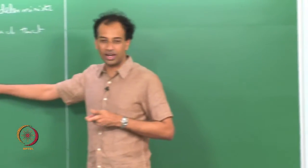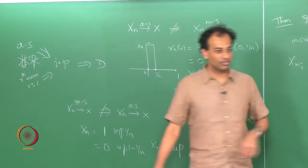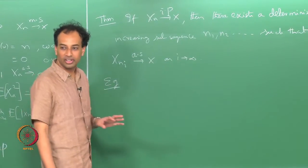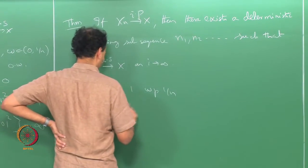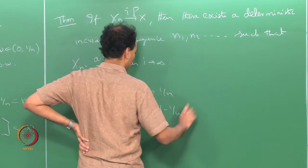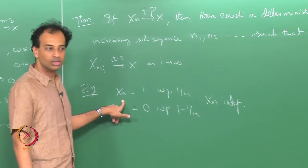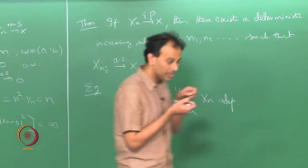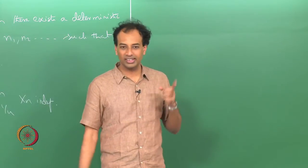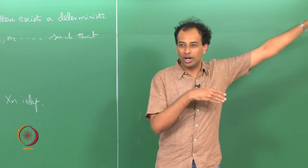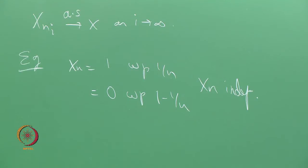The best way to explain this is with our favorite example: x_n = 1 with probability 1/n and 0 with probability 1 − 1/n, x_n independent. Here x_n converges to 0 in probability, but by the second Borel-Cantelli lemma, no matter how far out you go, there will be some 1 popping up somewhere almost surely. However, you can find a sub-sequence that avoids these occasional ones because they are rare enough.